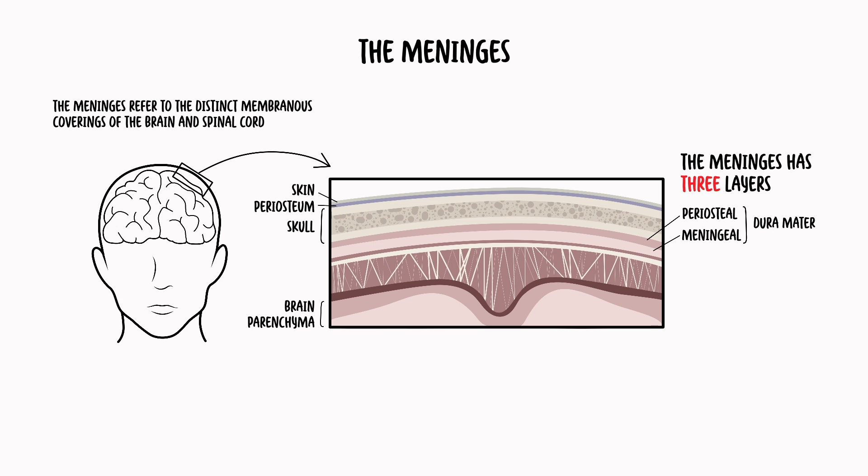The periosteal layer lines the inner surface of the cranial bones. The meningeal layer, found deep to the periosteal layer, is continuous with the dura mater of the spinal cord. The middle layer, which is directly underneath the dura mater, is the arachnoid mater, or membrane. The arachnoid mater is translucent and pliable.